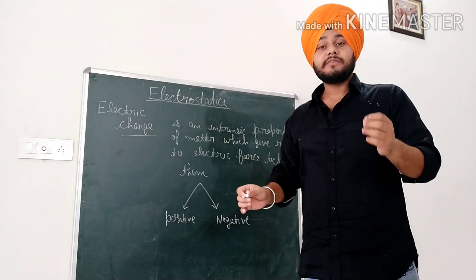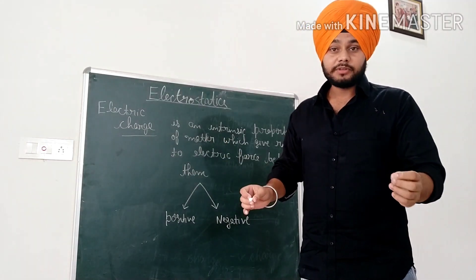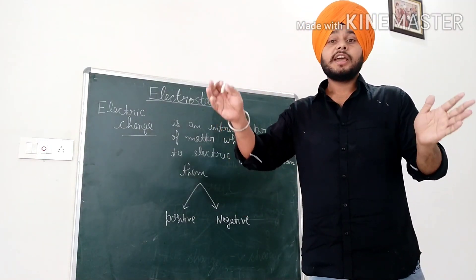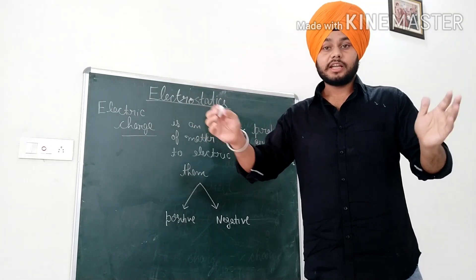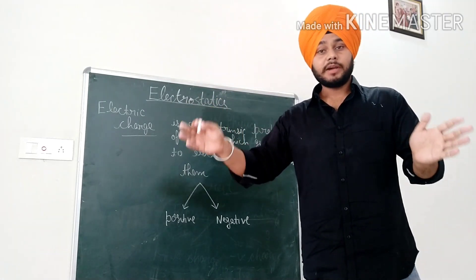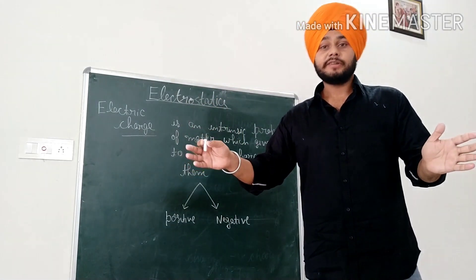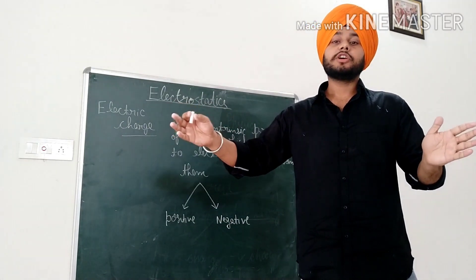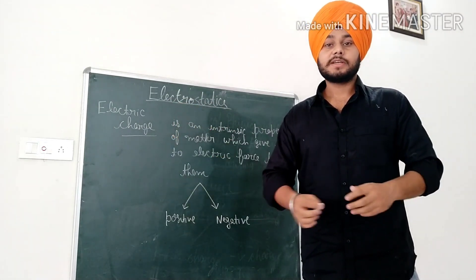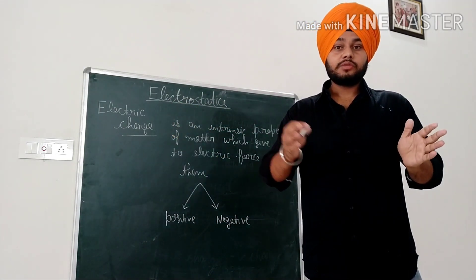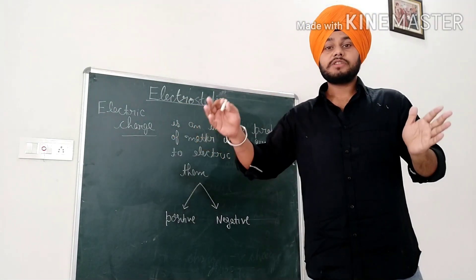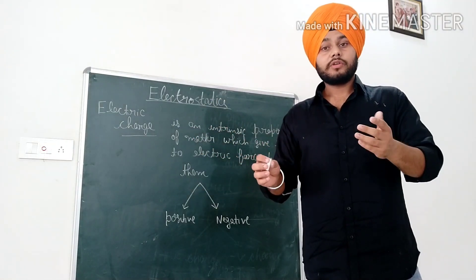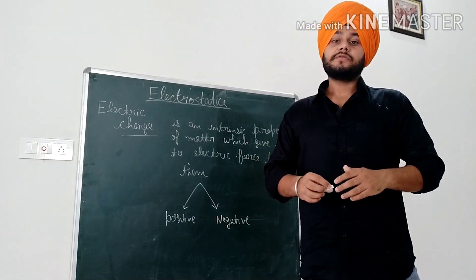The electric charge is an intrinsic property of matter which gives rise to force in nature. If two particles have the same type of charge — if both are protons, or if one is a proton and the other is also a proton — it will be a repulsive force. Similarly, if one is an electron and the other is also an electron, it will be a repulsive force.